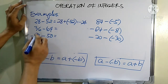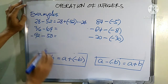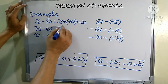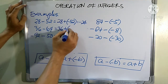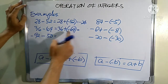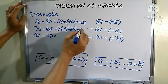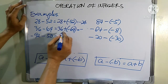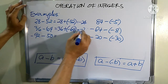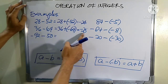Next, 36 minus 64. We rewrite this as 36 plus negative 64. Negative 64 is farther from zero, so we compute 64 minus 36, which is 28. Our final answer is negative 28.